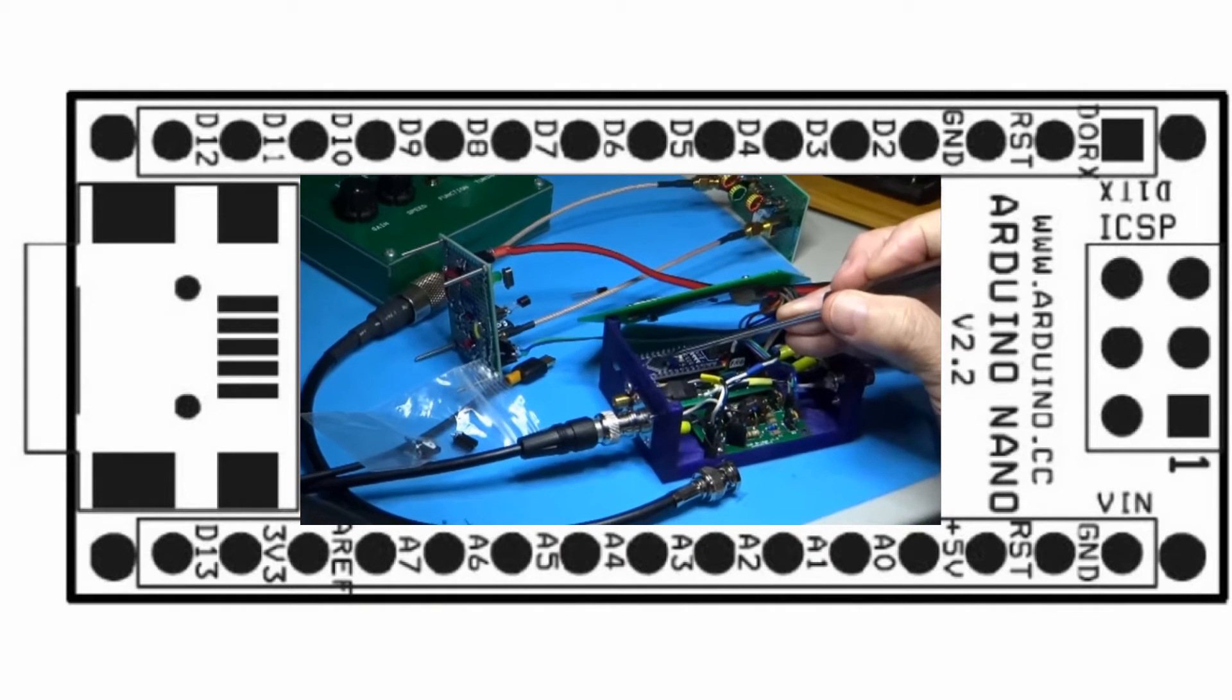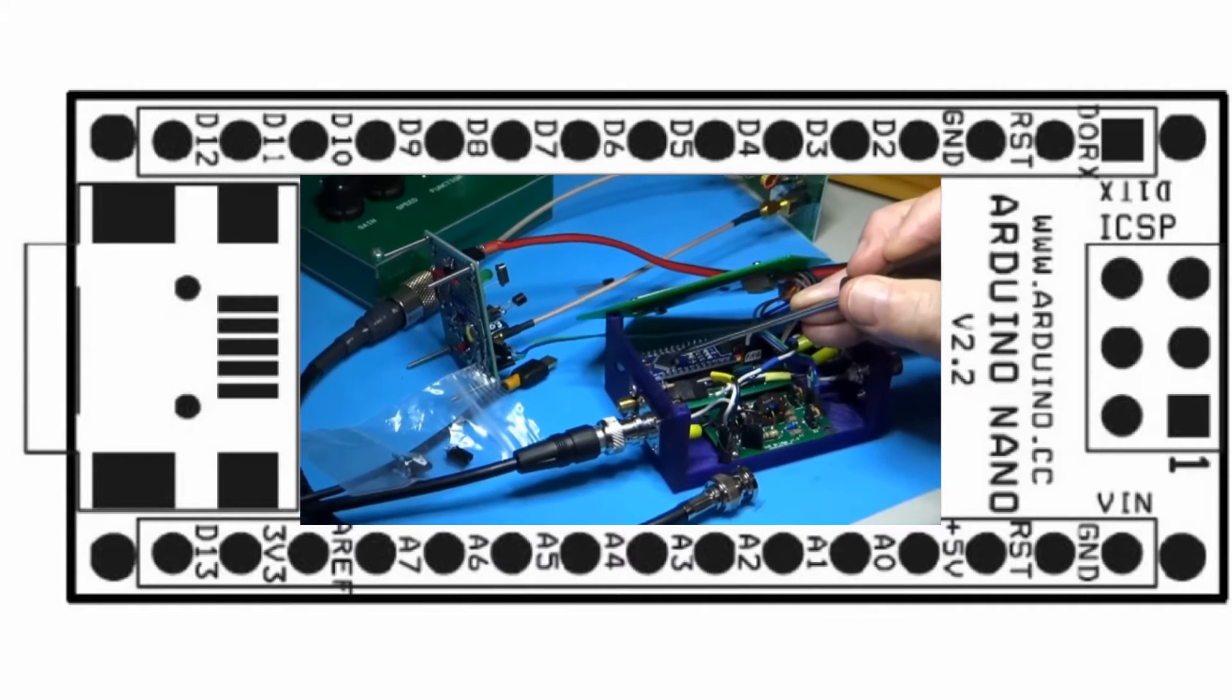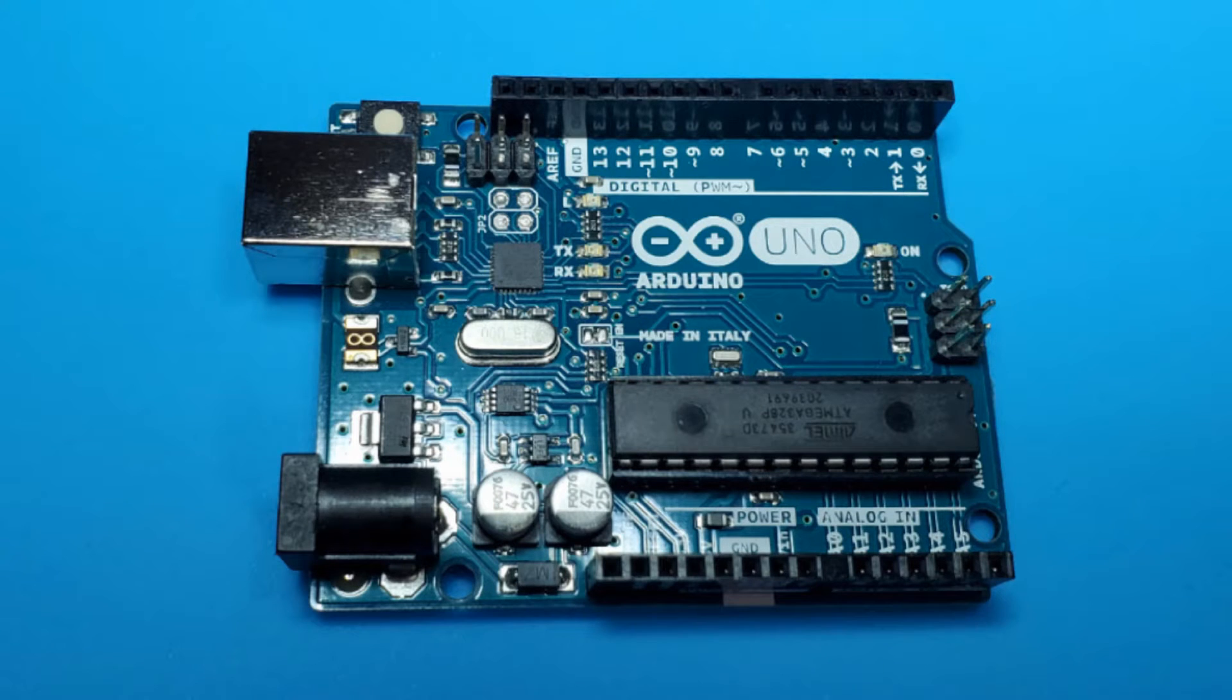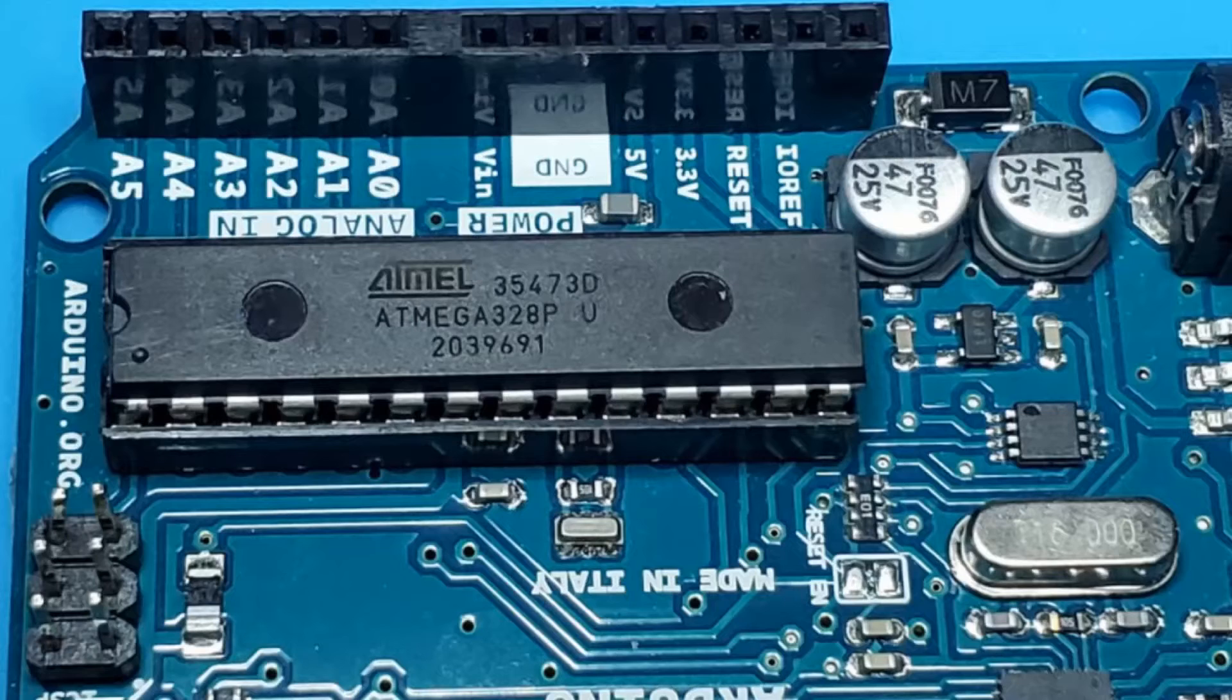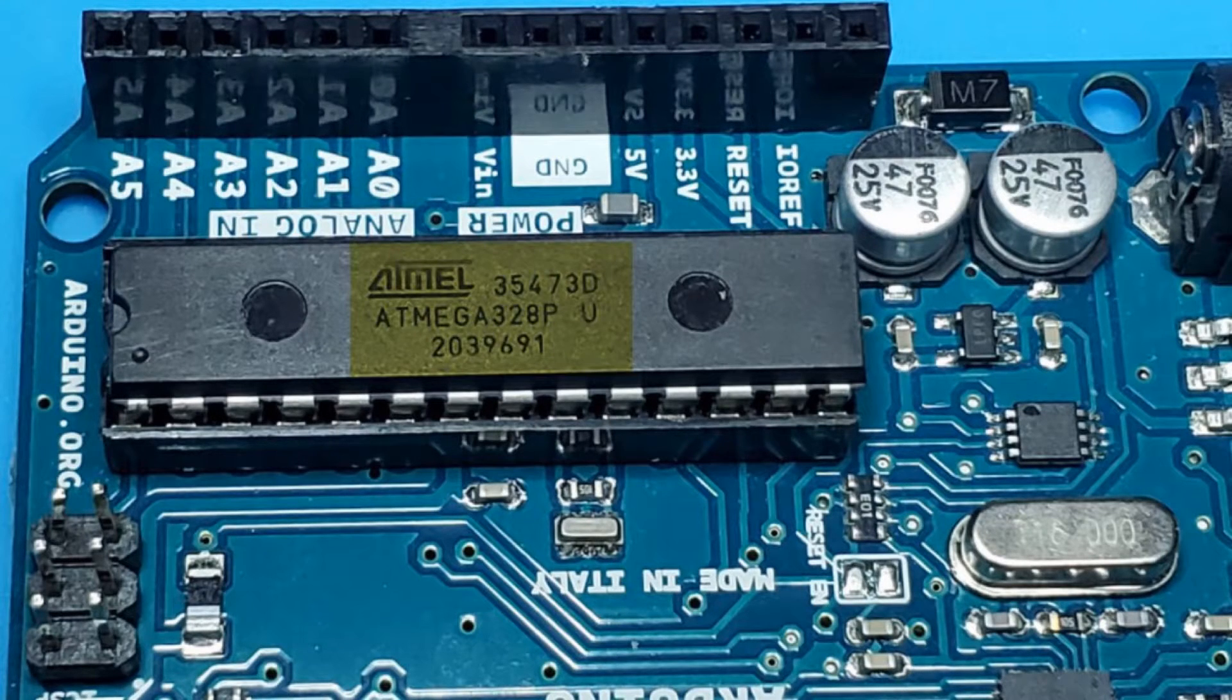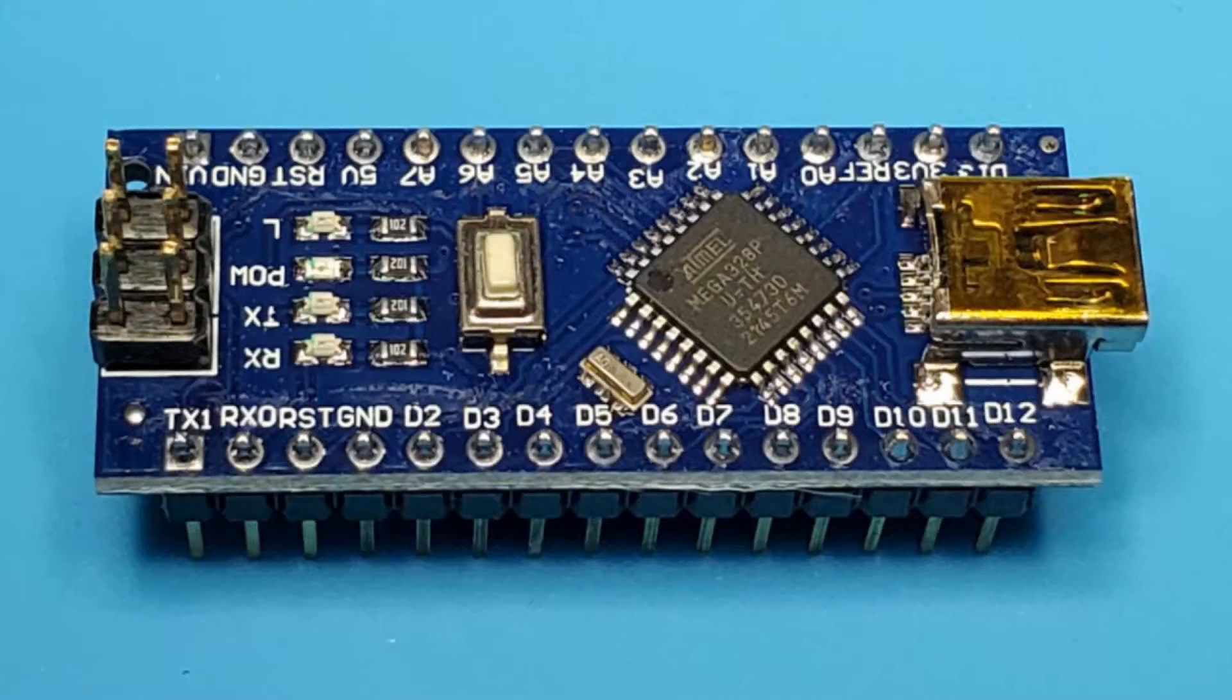The Arduino Nano uses the same Atmel microcontroller as the Arduino Uno, but with a different form factor. In the Uno, the ATmega328 is a 28 pin dual inline socketed package, while in the Nano it is a tiny SMT chip.